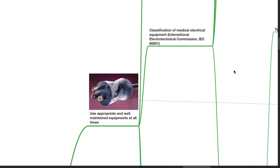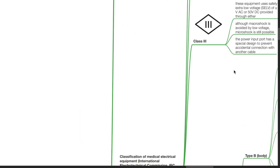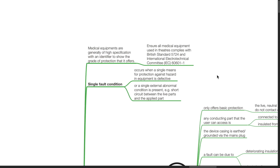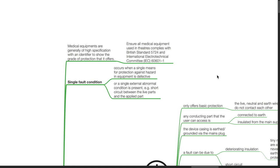Use appropriate and well-maintained equipment at all times. Medical equipment should comply with British Standard 5724 and International Electro-Technical Committee IEC 60601-1. A single fault condition occurs when a single means of protection is defective or a single external abnormal condition is present, such as short-circuit between live parts and the applied part.